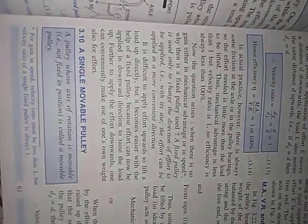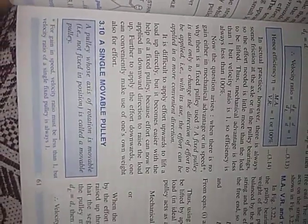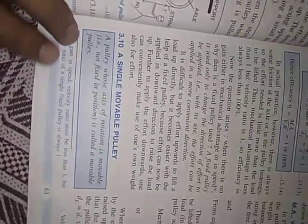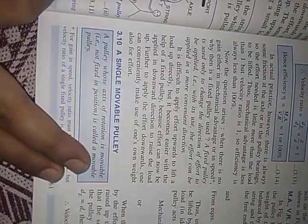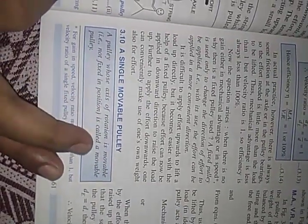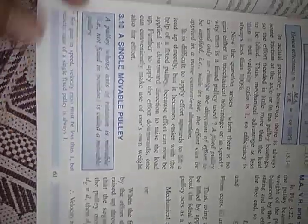Next is the movable pulley. A pulley whose axis of rotation is movable is called a single movable pulley. Its axis of rotation is movable, whereas in the fixed pulley the axis of rotation is fixed.